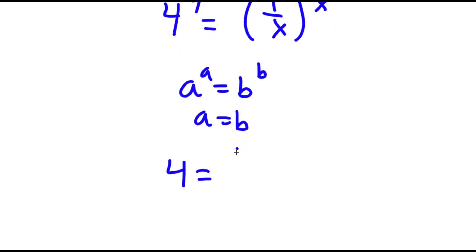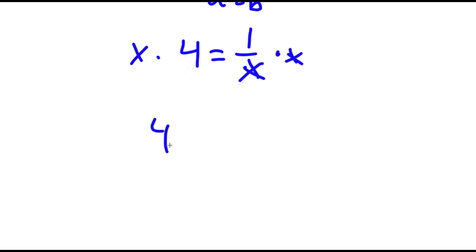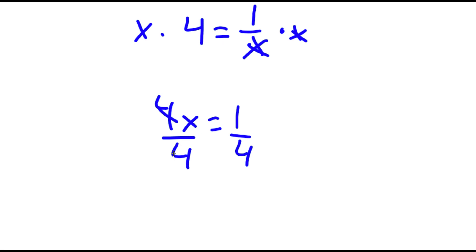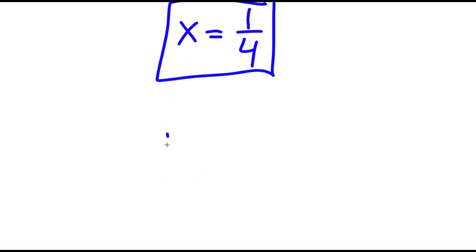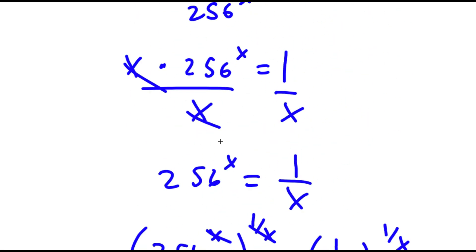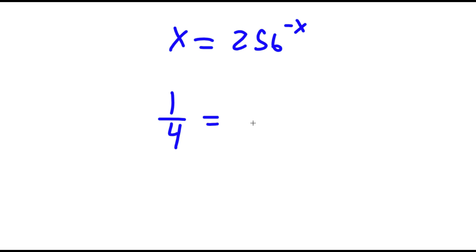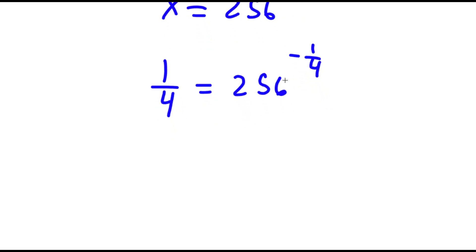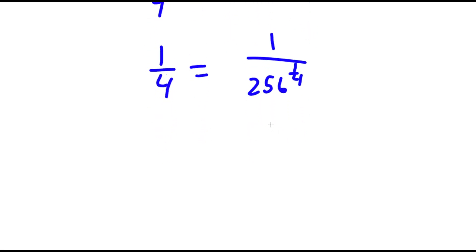So in this case, 4 is equal to 1 over x. Now if I multiply both sides by x, these two cancel out, and I get 4x is equal to 1. Now if I divide both sides by 4, I get x is equal to 1 over 4. So now to check: I have x is equal to 256 to the power of negative x, and x is equal to 1 fourth. So I have 1 fourth is equal to 256 to the power of negative 1 fourth, which is the same as 1 over 256 to the power of 1 over 4. Now, 256 to the power of 1 over 4 is 4. So I have 1 fourth is equal to 1 fourth, and this is correct.